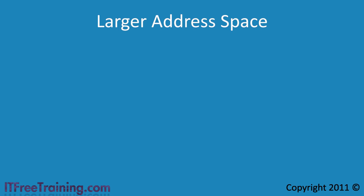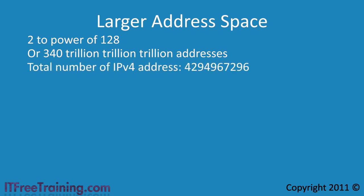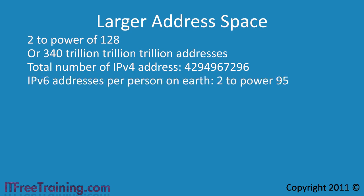There are many different ways that people have used to describe how many addresses are available in IP version 6. The number of addresses is 2 to the power of 128, or 340 trillion trillion trillion addresses. To put this in perspective, IP version 4 has over 4 billion addresses. Using IP version 4, you could not even allocate a single IP address for every person on the planet. With IP version 6, you could allocate 2 to the power of 95 IP addresses for every person on the planet.